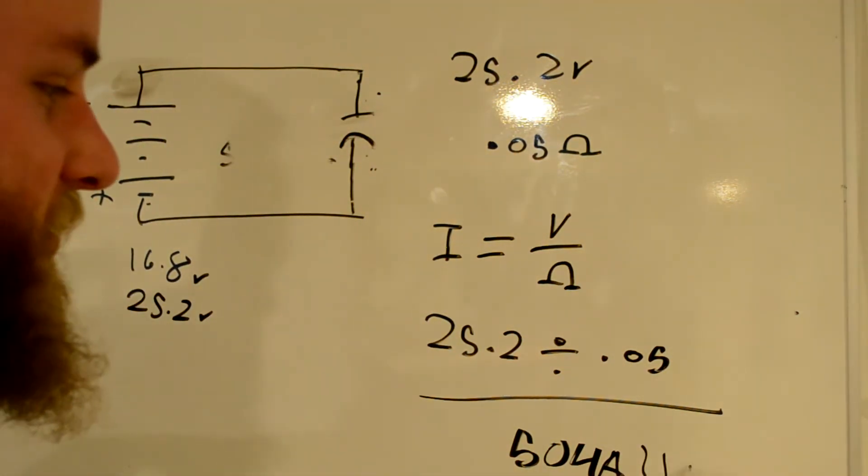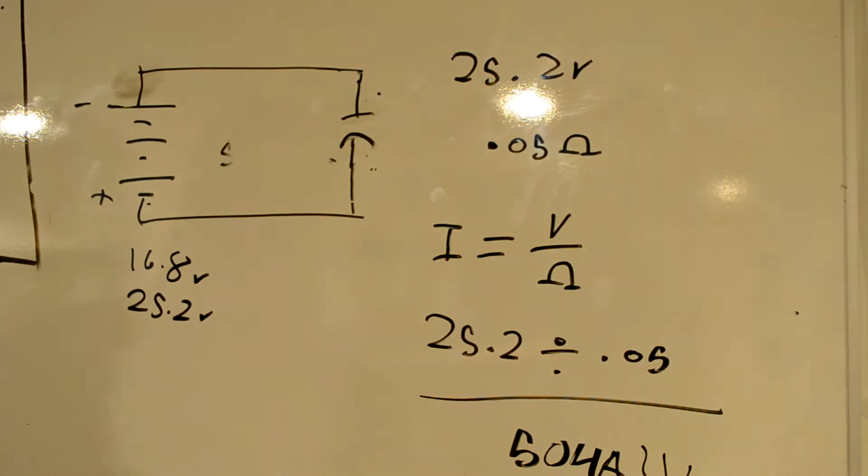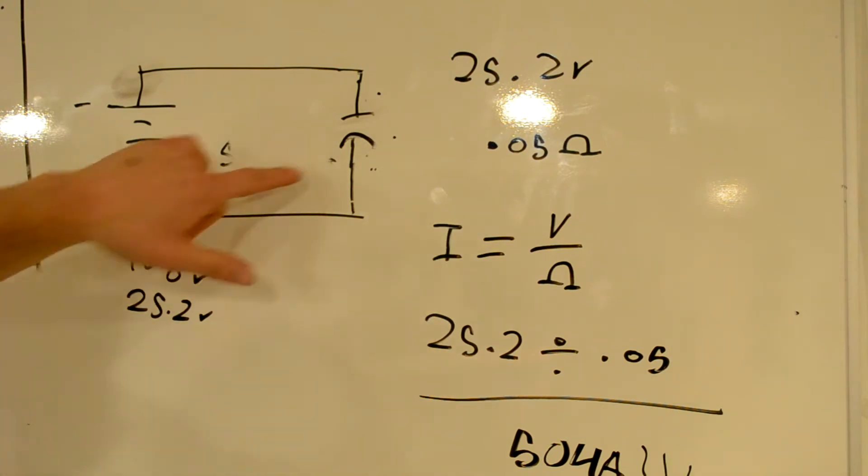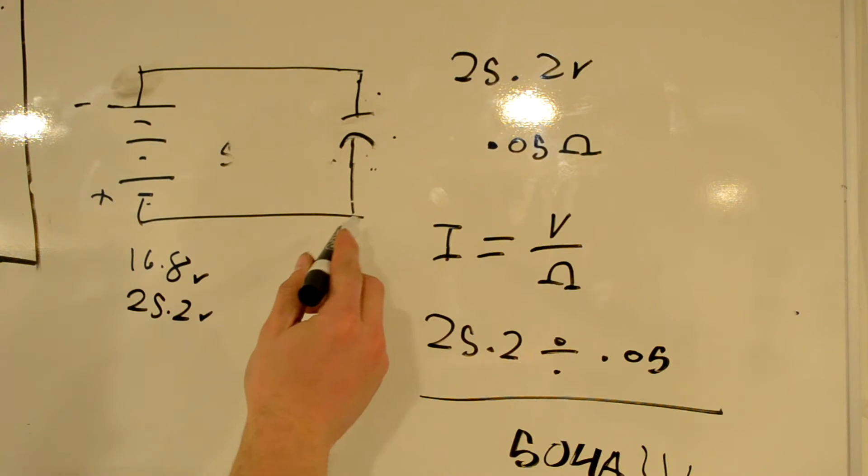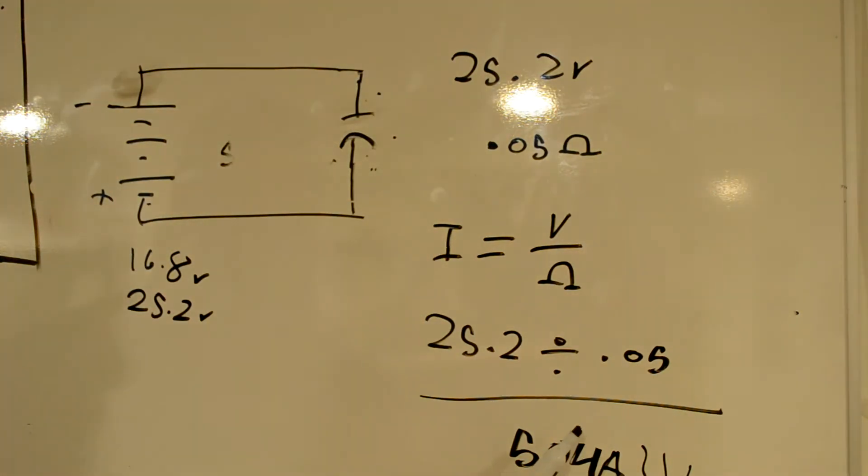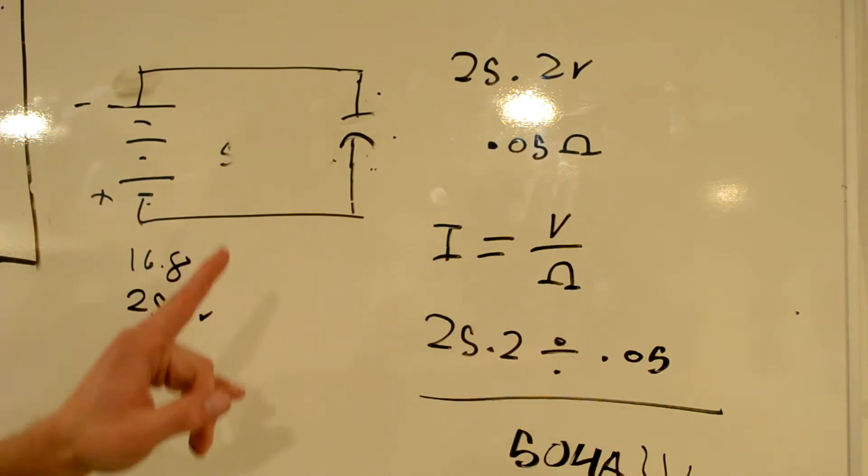That's ridiculous. That's a lot of current. But keep in mind, as the capacitor charges, the potential between the capacitor and the battery is smaller, because this approaches 25.2 volts fully charged. So after a few milliseconds, the capacitor reaches the same level as the battery, and the current between the two is zero. The flow between the two is zero. But the instant you plug the battery in, it's peaking at 504 amps. And that's the reason that you get an incredible spark when you plug in your battery.